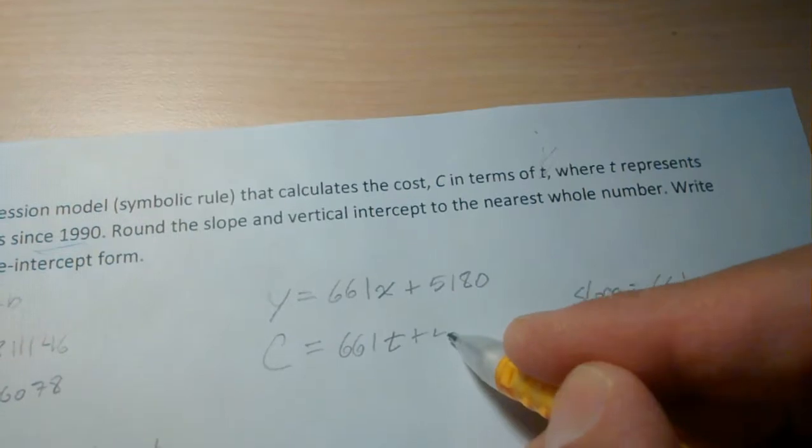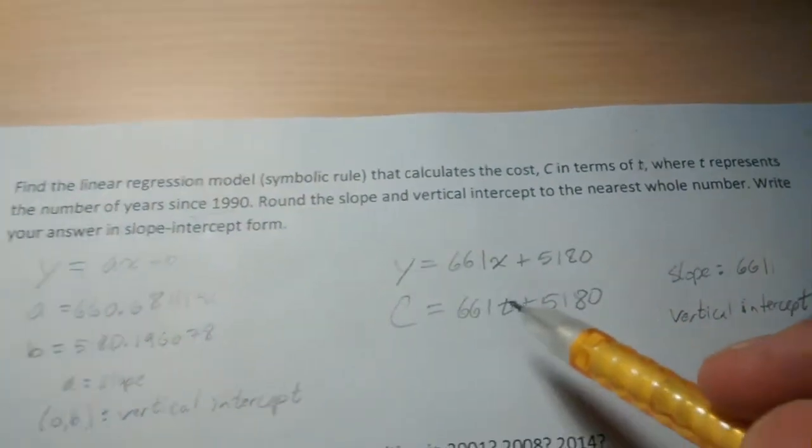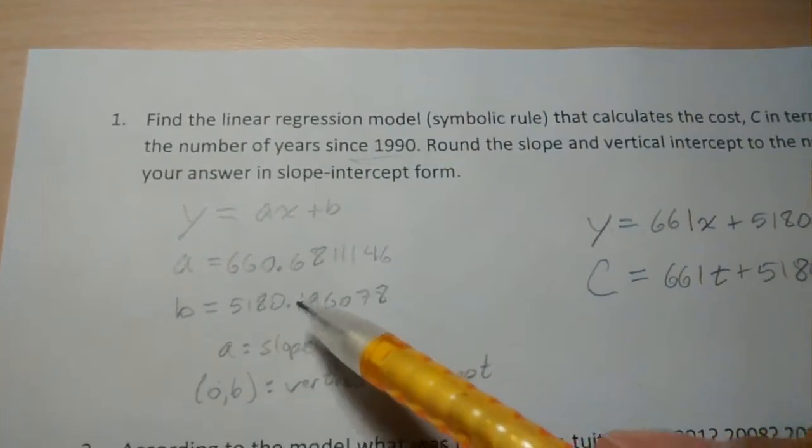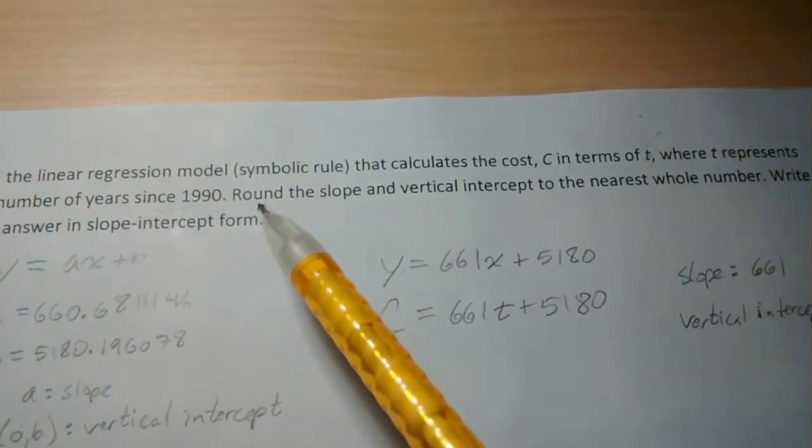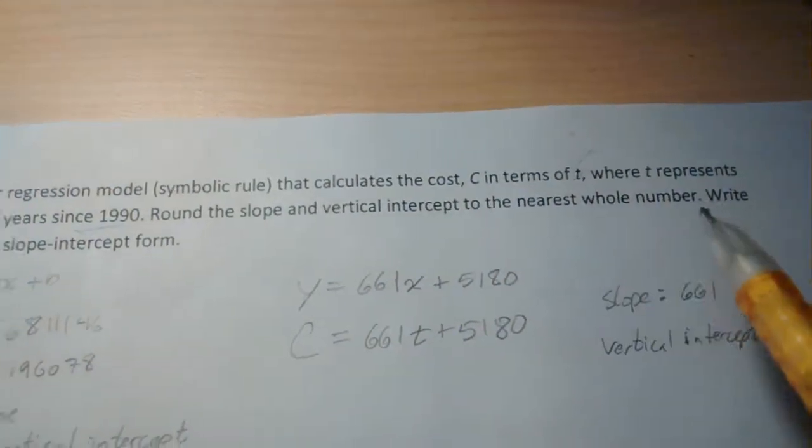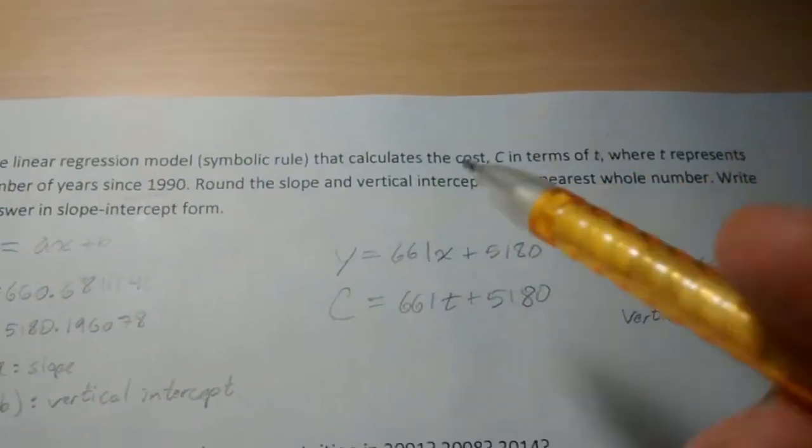And here, 661 times T plus 5180. Rounding that number here to the nearest whole number. So we're rounding those to the nearest whole number. As it says here, round the slope and vertical intercept to the nearest whole number and write your answer in slope intercept form.